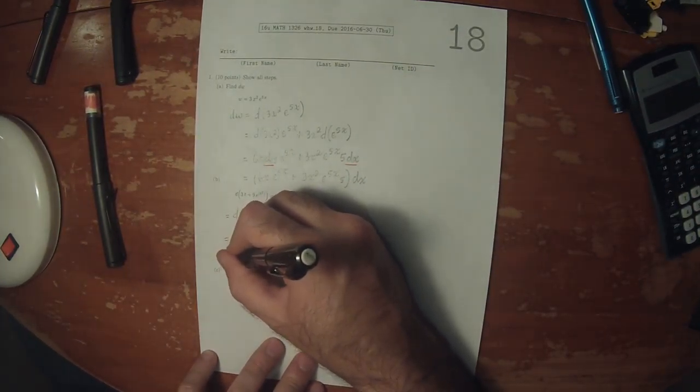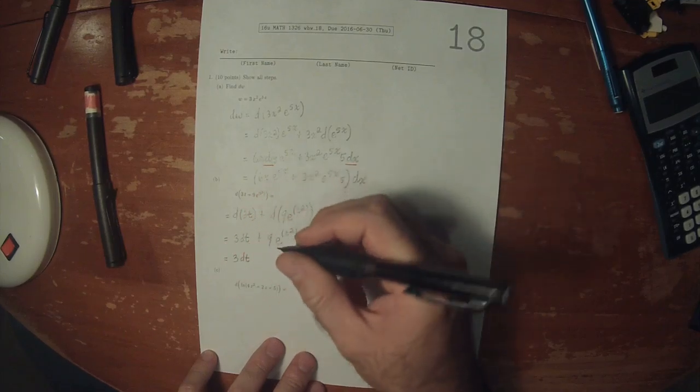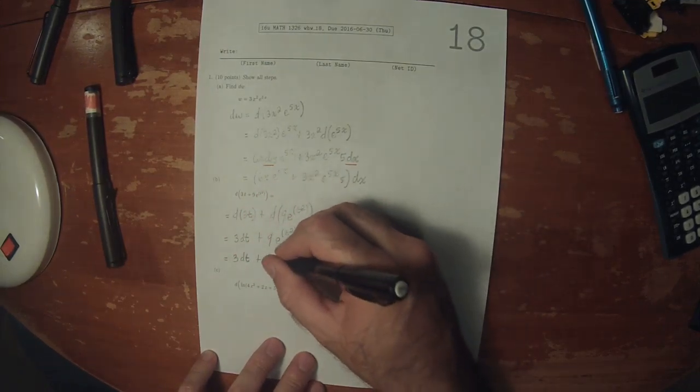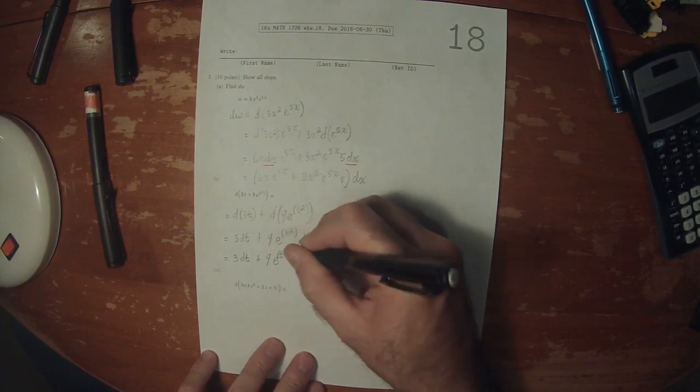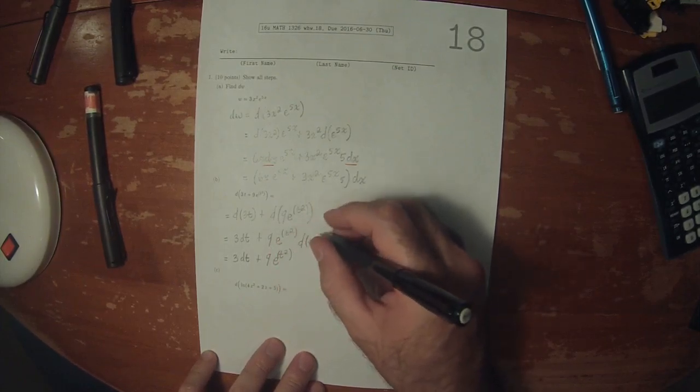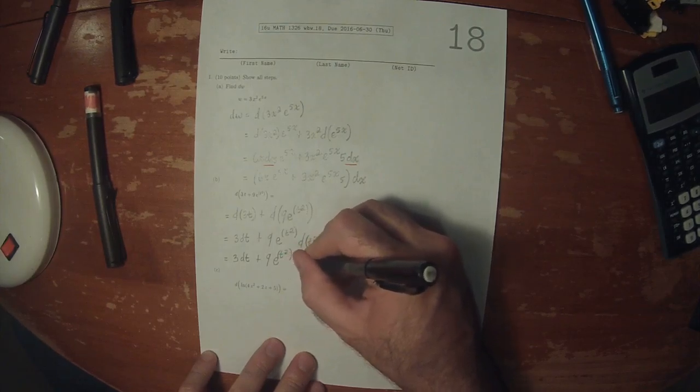Which is 3dt plus 9e to t squared. The differential of t squared is 2t dt.